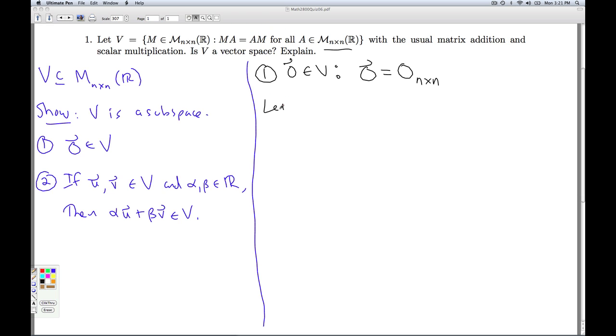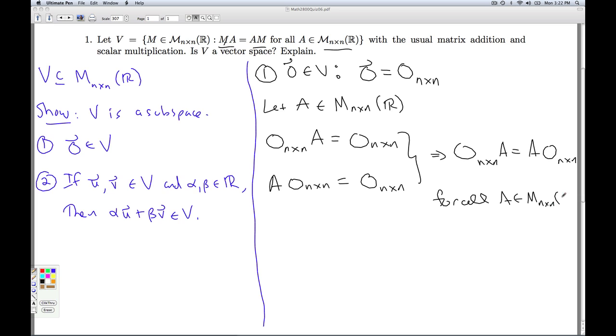So what I'm going to do is let A be some fixed but arbitrary choice of matrix in the n by n matrices. So it's some generic n by n matrix. And what I need to compare is the zero matrix times A and then A times the zero matrix. Well, going back to what we did in chapter one, the n by n zero matrix times any n by n matrix, well, that's the n by n zero matrix. And if I take an n by n matrix times the n by n zero matrix, I get the n by n zero matrix back. And these are the same. So I've just shown that this holds for all n by n matrices.